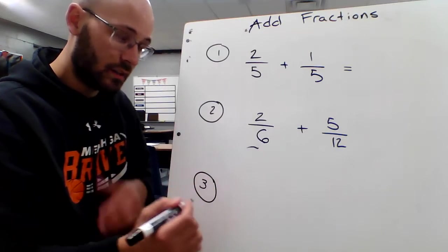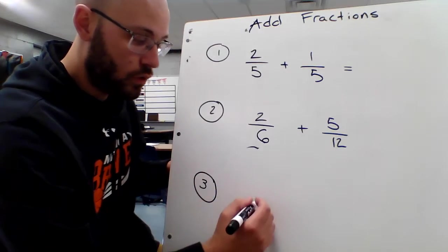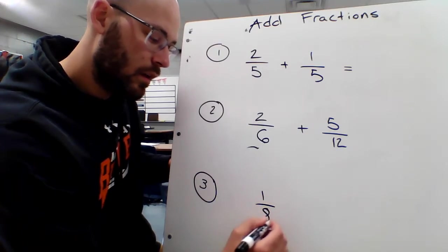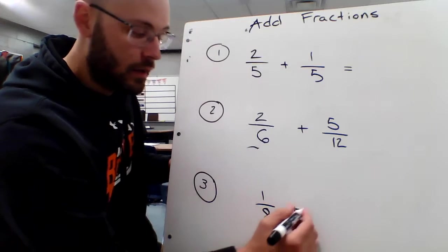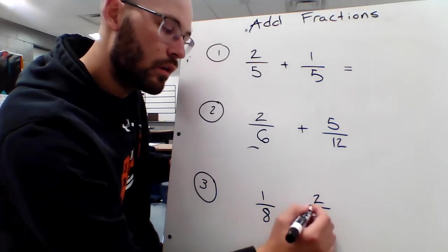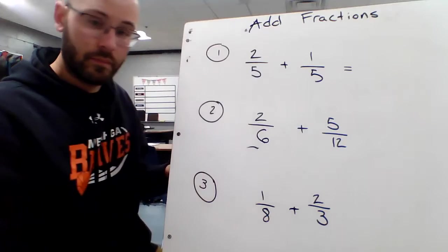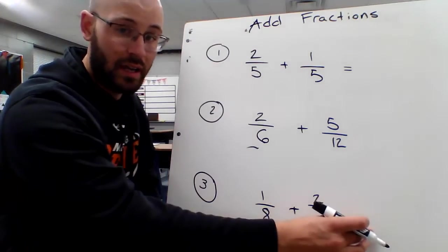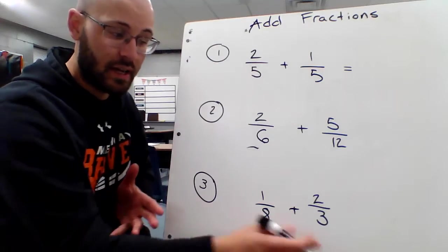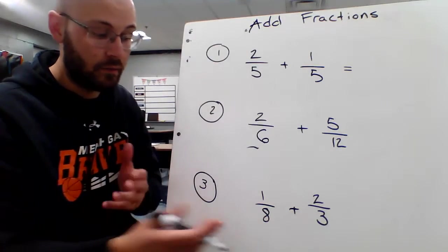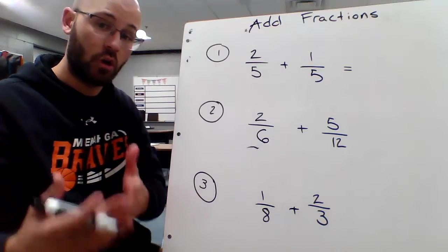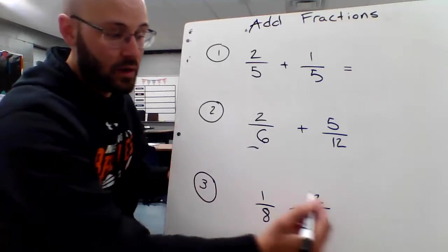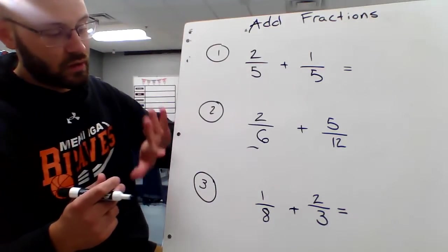So, number three, finally, this is the hardest one. I want to see if you can do one where you have to change both sides. For example, 1 eighth, and I'm going to add 2 thirds. Well, I've got to figure out 3 doesn't fit into 8, so I can't just change this into an 8. I have to change both sides, something that both of 8 and 3 can fit into. They're factors of what multiple and what common denominator can I use. That's where I'm going to leave you guys.